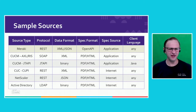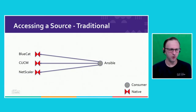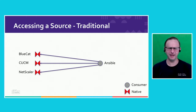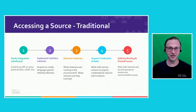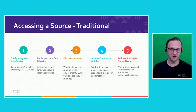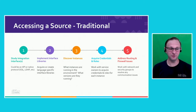Getting access to a bunch of different things in the back end from a single script can be challenging at times. As an example, let's take a look at an Ansible playbook that needs to talk to three different things: BlueCat, Call Manager, and NetScalers. For each service in the back end, there's a series of steps you have to go through. You have to study the integration interfaces — is it an API? Is it a native protocol? We need to implement interface libraries for a specific language. You have to discover all the instances — we might have dev instances, prod instances, a number of different instances of a given product in our environment. Number four, we acquire the roles and credentials — go to each instance owner and ask for access.